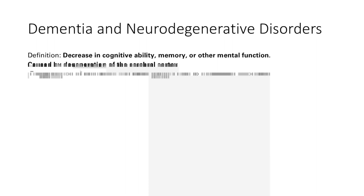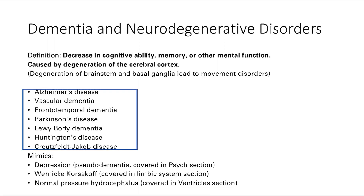There are many different types of neurodegenerative disorders: Alzheimer's, vascular dementia, frontotemporal dementia, Parkinson's disease, Lewy body dementia, Huntington's disease, and Creutzfeldt-Jakob disease. These are the main neurodegenerative disorders.